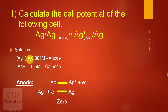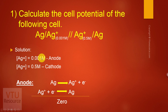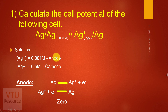The given data: concentration of Ag⁺ is 0.001 M — lower concentration, therefore it acts as anode. Concentration of Ag⁺ is 0.5 M — higher concentration, therefore it acts as cathode. Note this down because it will be easier during substitution.